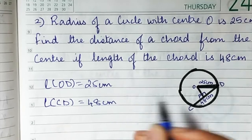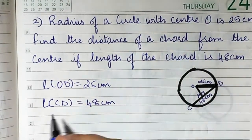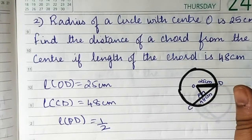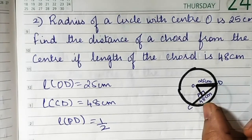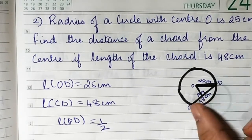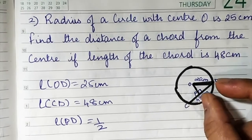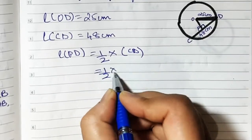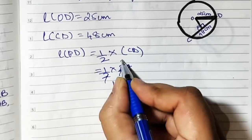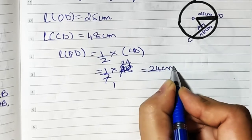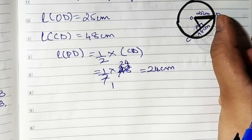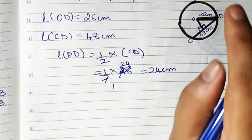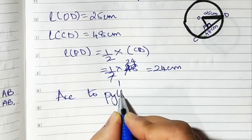Since the perpendicular from the center bisects the chord, PD is half of CD. CD is 48, so PD is 24 centimeters. We have PD = 24 and OD = 25. Since the angle is 90 degrees, we use the Pythagorean theorem.